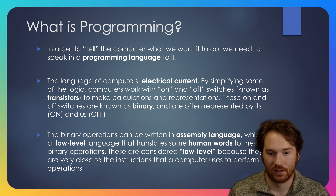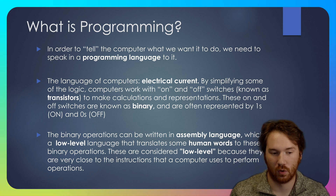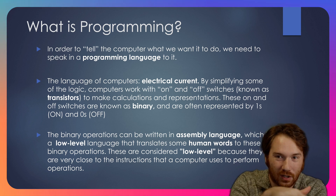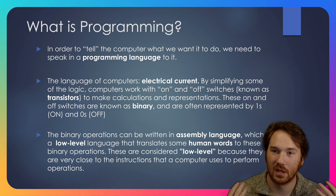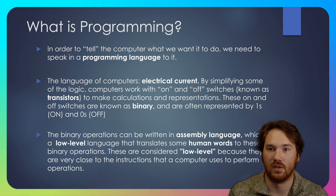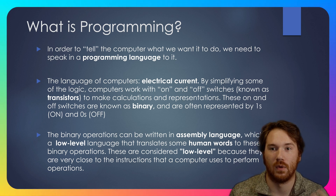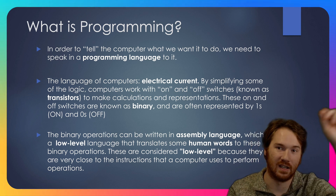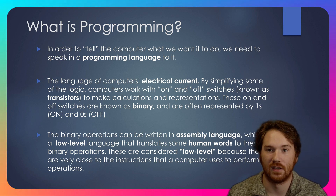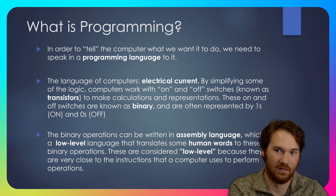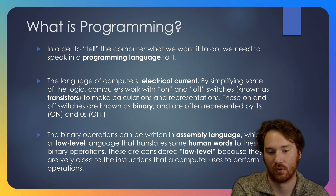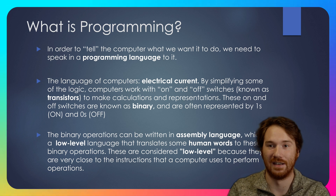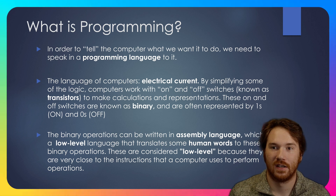Those binary operations — ones and zeros — can be written in assembly language, which is a low-level language that translates some human words to those binary operations. They're considered low-level because they are very close to the instructions a computer uses to perform operations, and less human-intuitive compared to high-level languages. For example, computers need to know operations for adding numbers, including carrying — the same way we handle decimal addition. Assembly language makes those operations into written language, directly mapping instructions like carry or AND to binary data operations.